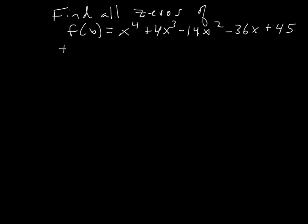Going through the numbers and checking which ones divide 45 evenly: 2 doesn't, but 3 does. The possible rational zeros are ±1, ±3, ±5, ±9, ±15, and ±45.